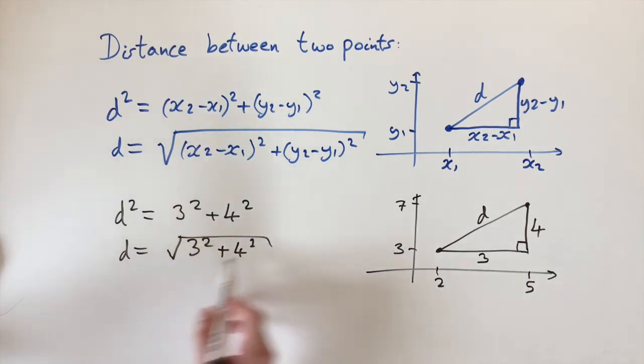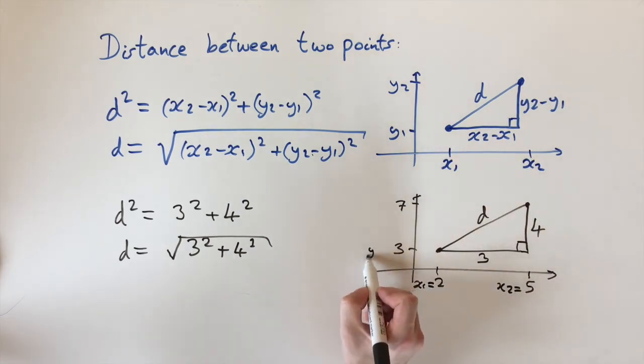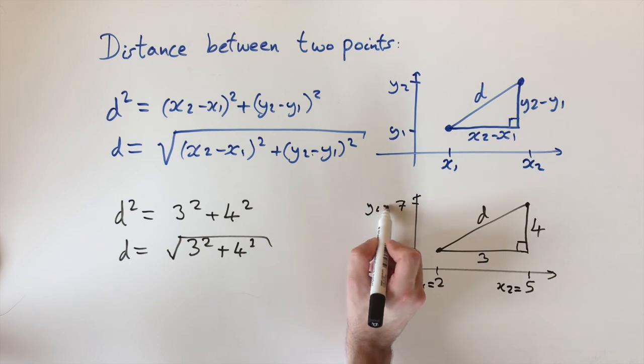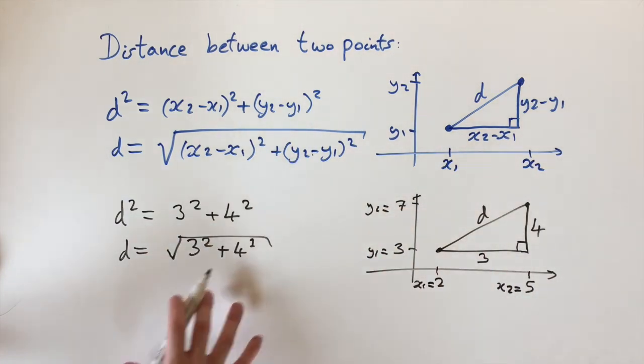And this is exactly the same as the formula we just used. So if this is x1, this is x2, this is y1, this is y2, and you plug these numbers into this formula, it's going to give you exactly the same thing. But this is kind of a nicer way to remember the method.